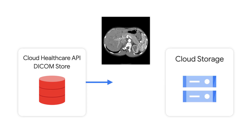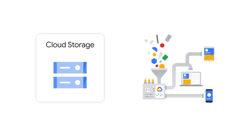The next step is to use filtered export to export specific image instances to Cloud Storage, which is used to store file objects in the cloud. Filtered export is useful because you may want to export specific images from a larger dataset to Cloud Storage and convert them from DICOM to PNG or JPEG for further analysis. Once the images are in Cloud Storage, we can then start training our machine learning model using these images as our test dataset.